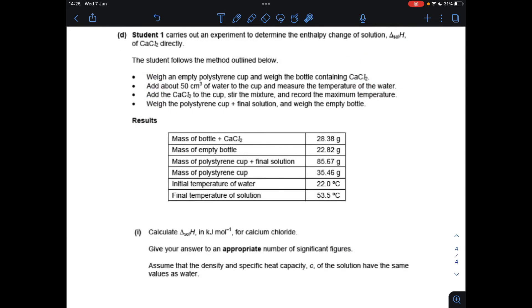Moving on to part D now. So we've got this data here about student one's experiment where they've calculated enthalpy change of solution for calcium chloride directly. So it's a calorimetry experiment, so we're going to be using the q equals mcΔt equation. So the first thing I'm going to do is work out the mass of calcium chloride used, the mass of the solution that was heated up, and the temperature rise for the solution.